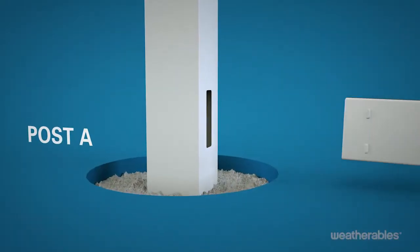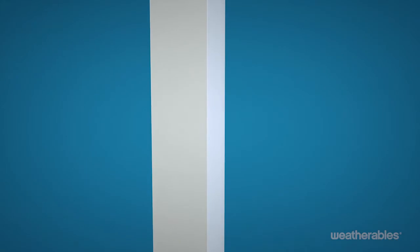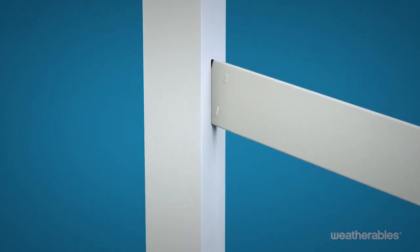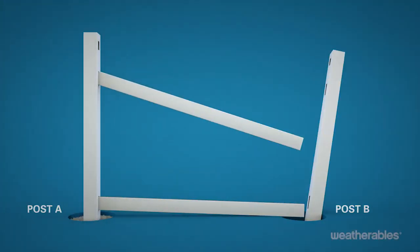Next, slide the bottom rail, the one with the aluminum insert and mid rail, into the routed holes in post A. Now it's time to insert the pickets. We recommend resting the bottom rail on a 2 x 4 to keep it a level 2 inches off the ground, to make it easier to insert the pickets.